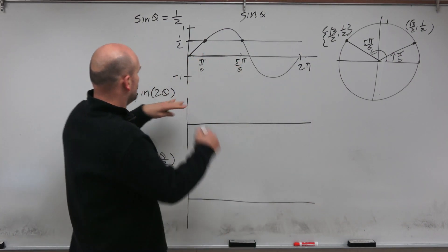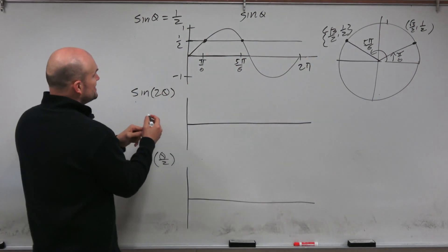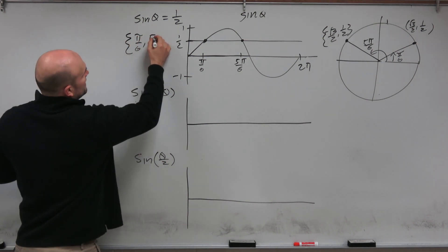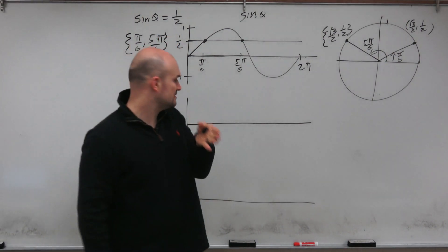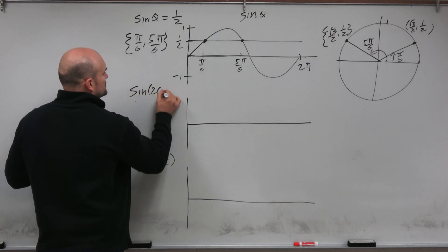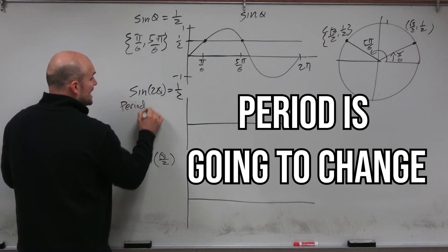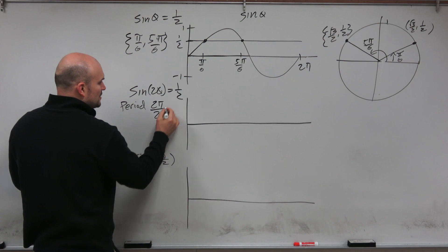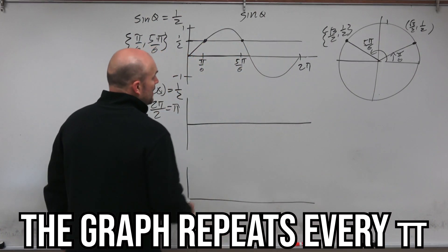Now what about when we do sine of two theta — what is happening to this graph? When we look at sine of two theta equal to one half, one thing to understand is the period is now going to change. Typically the period was two pi divided by b, where b is going to be two. So now my period is pi. Instead of the graph repeating every two pi, the graph now repeats every pi.